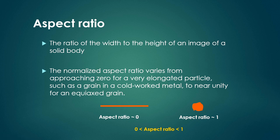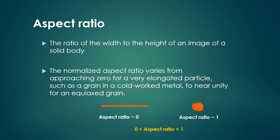Aspect ratio is defined as the ratio of width to height of an image of a solid body. For a long rod where the diameter is much smaller than the length, aspect ratio ≈ 0 (diameter/length → 0). For an almost spherical particle, aspect ratio ≈ 1 since length and diameter are approximately equal. Aspect ratio ranges from 0 to 1.